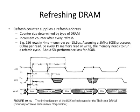DRAM chips often use refresh counters to supply refresh addresses. The counter size is determined by the type of DRAM, and after every refresh cycle the counter is incremented. Here's a simple example: for a DRAM with 256 rows, it has to finish refreshing every single row within 4 milliseconds in order to retain the information. That means for every row, you essentially spend about a little over 15 microseconds on the refreshing operation.